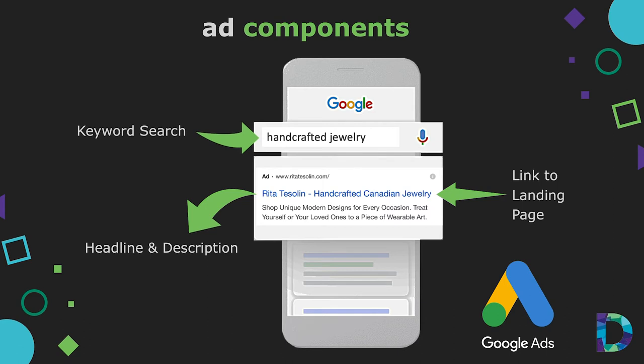Your ad copy needs to stand out over your competitors' ads. It needs to match the searcher's intent, align with your target keywords, and provide potential customers with the answer or solution to their query. For example, a search for 'handcrafted jewelry' yielded a concise result whose copy uses limited space effectively. The keyword 'handcrafted' appears in the headline, indicating a good keyword match, and the description addresses the persona's query: 'Treat yourself or your loved ones to a piece of wearable art.'